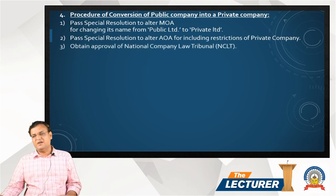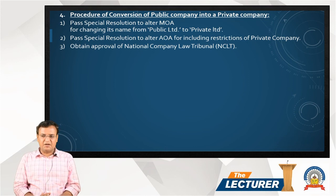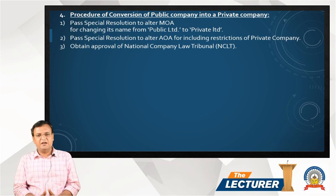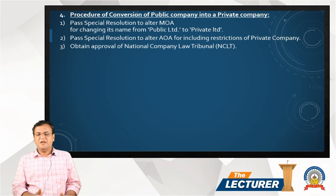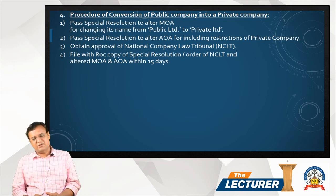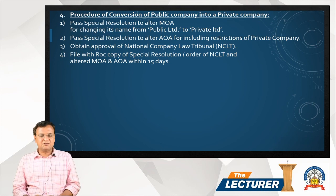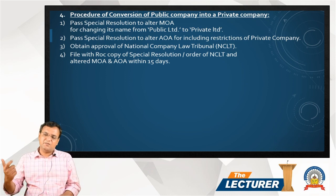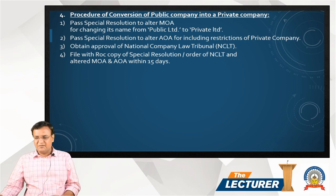After that, obtain the approval of the NCLT — the National Company Law Tribunal. The central government has delegated its authority to the NCLT, so any public company wanting to convert itself into a private limited company requires approval from the NCLT. Next, file with the ROC a copy of the special resolution and the order of the NCLT, along with altered memorandum and articles, within 15 days.